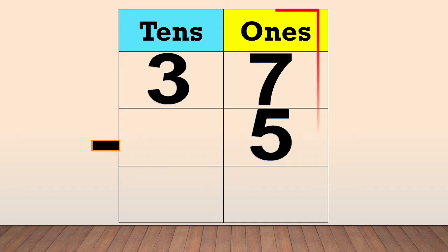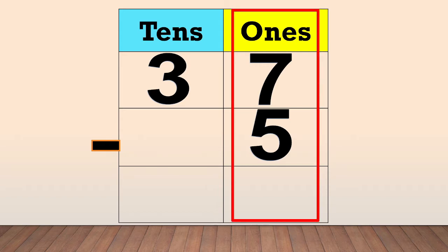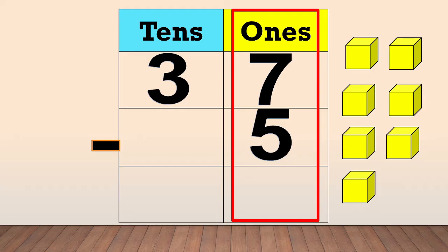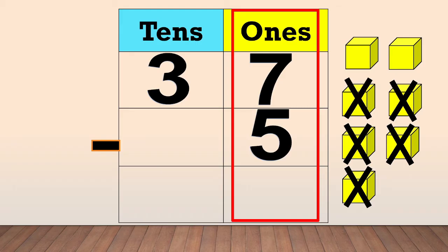Next, we subtract the ones: 7 minus 5. We draw 7 boxes equal to the minuend — 1, 2, 3, 4, 5, 6, 7. Then, cross out the boxes equal to the subtrahend: 1, 2, 3, 4, 5. Now, count the remaining boxes: 1, 2. So, the answer is 2. We put 2 in the ones column.